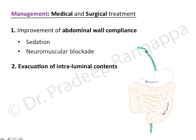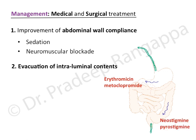All intra-luminal contents must be evacuated. A nasogastric or Ryle's tube should be inserted to decompress the stomach, and gastric emptying should be facilitated using erythromycin or metoclopramide. Colonic evacuation can be facilitated with neostigmine, pyridostigmine, or a flatus tube. Hypokalemia must be aggressively corrected, as it worsens the vicious cycle.